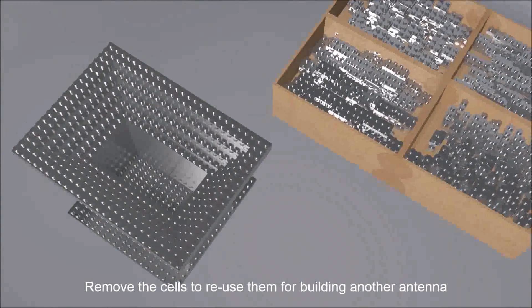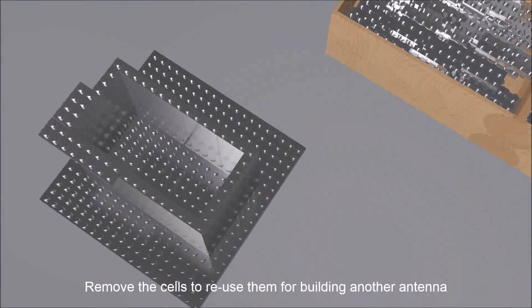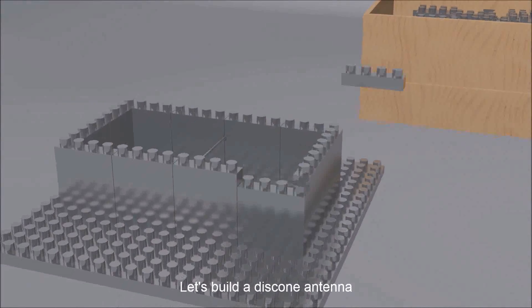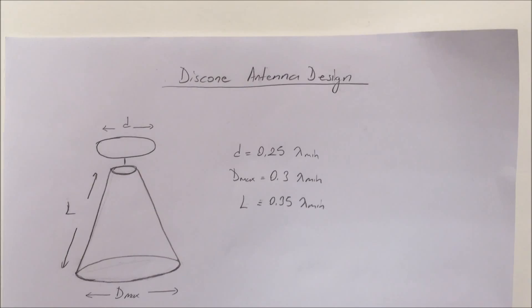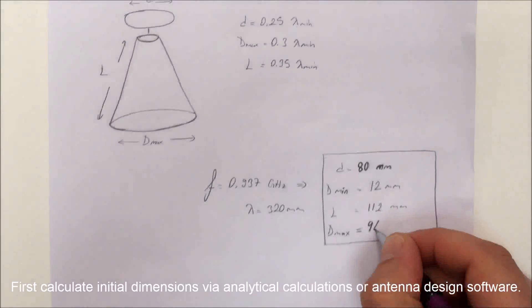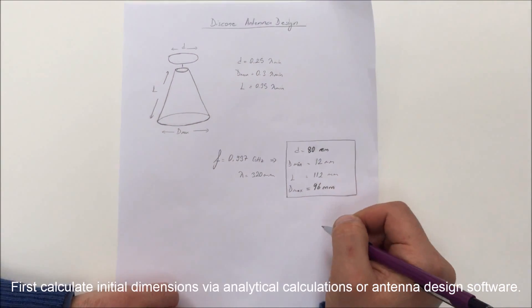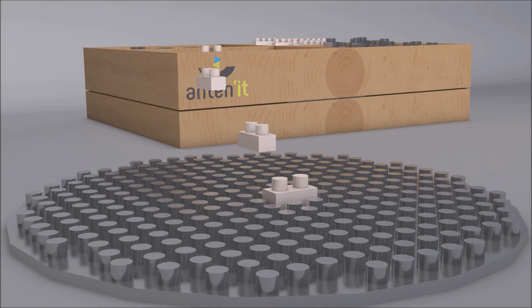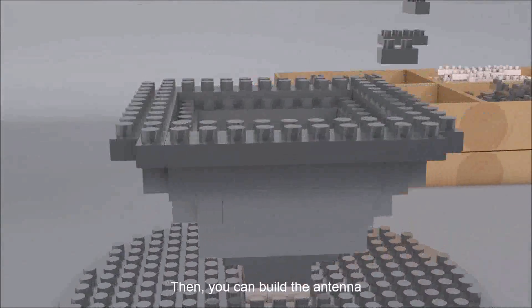Remove the cells to reuse them for building another antenna. Let's build a disk cone antenna. First, calculate the initial dimensions via analytical calculations or antenna design software. Then, you can build the antenna.